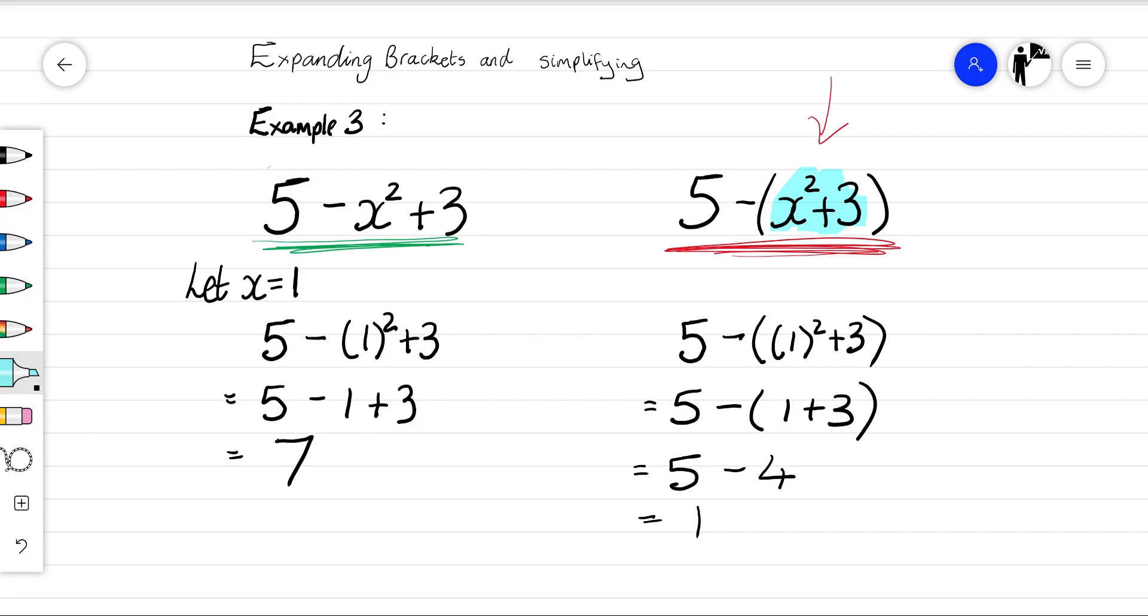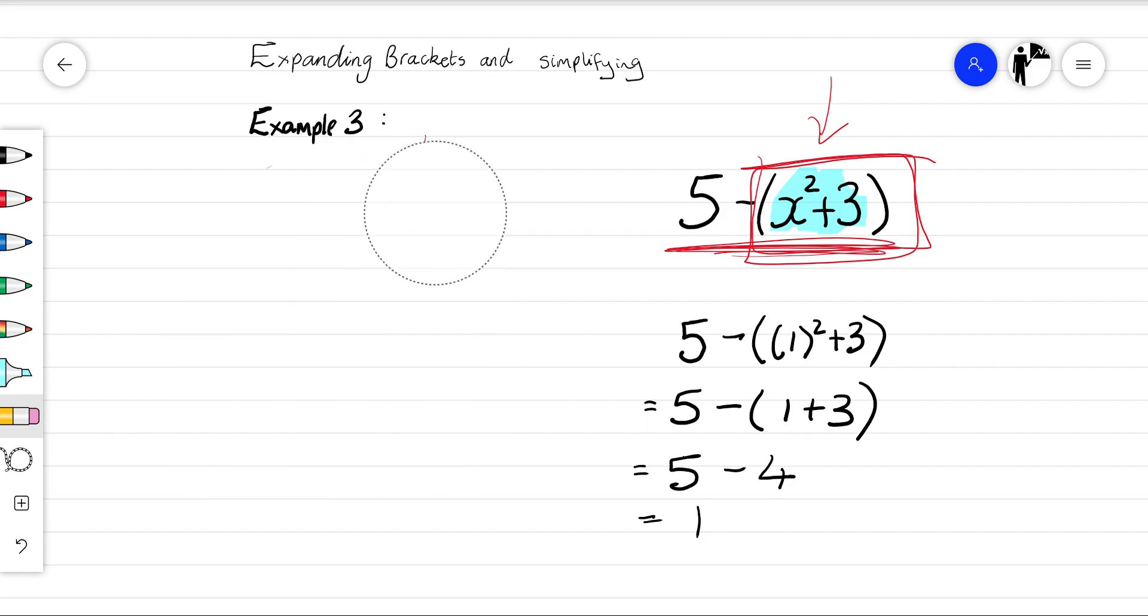In this first expression, only the x squared is being subtracted. But in this second expression, x squared plus 3 is being subtracted. It's the x squared plus 3 that is being subtracted. So it's important how we deal with situations like this, and we can recognize the similarities and the differences when we're working through. Right, so we'll have a look at example 3 now.